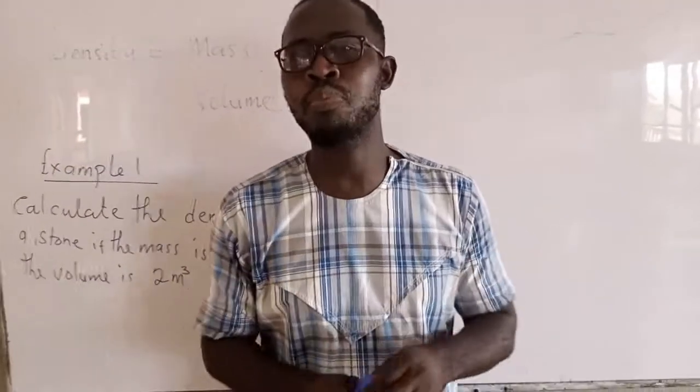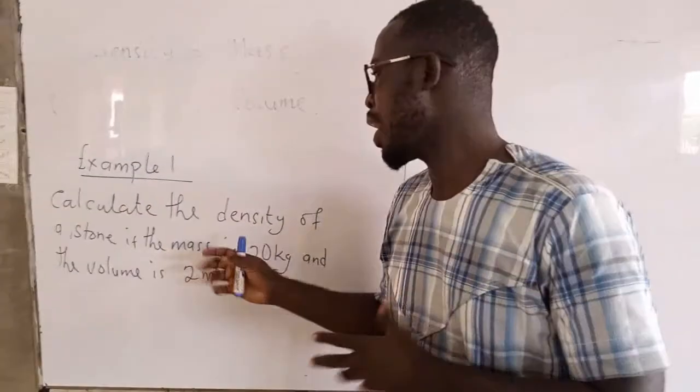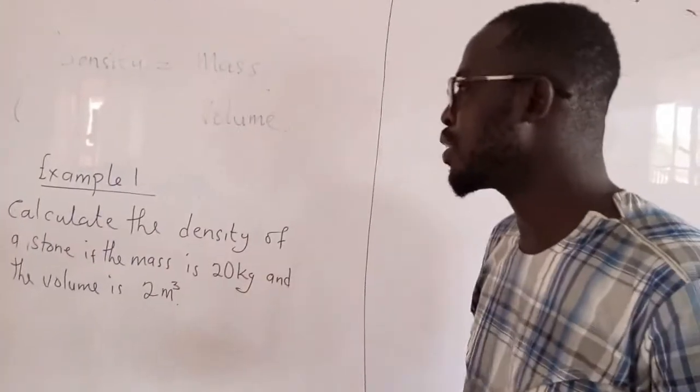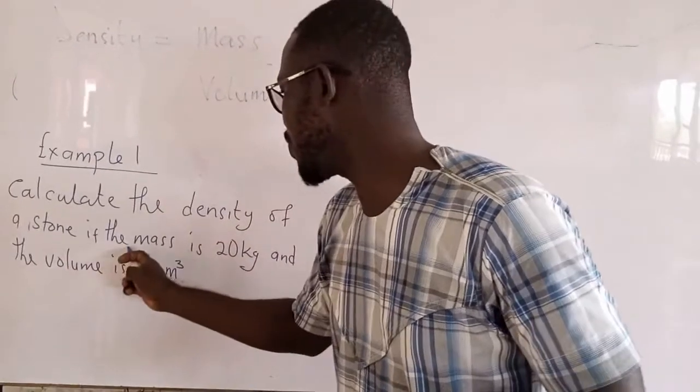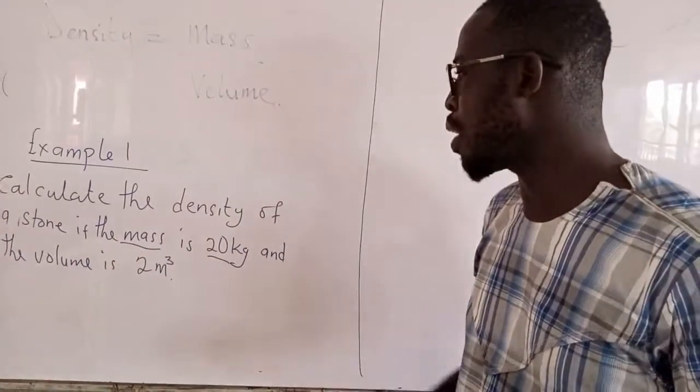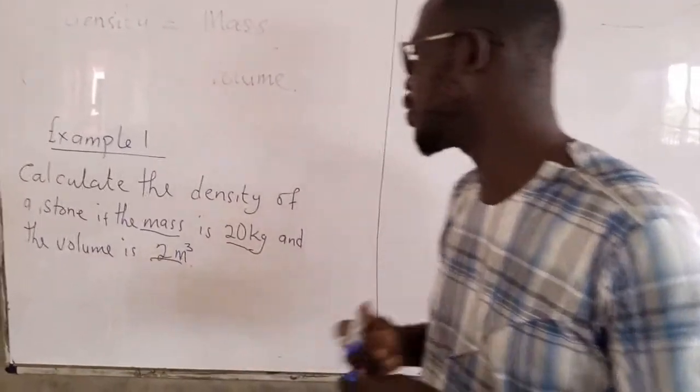So let's look at some examples on how to calculate density. Our first example: calculate the density of a stone if the mass is 20 kilogram and the volume is 2 meters cubed.